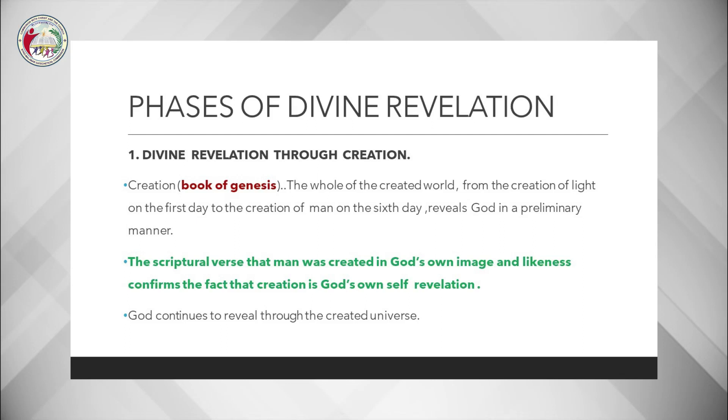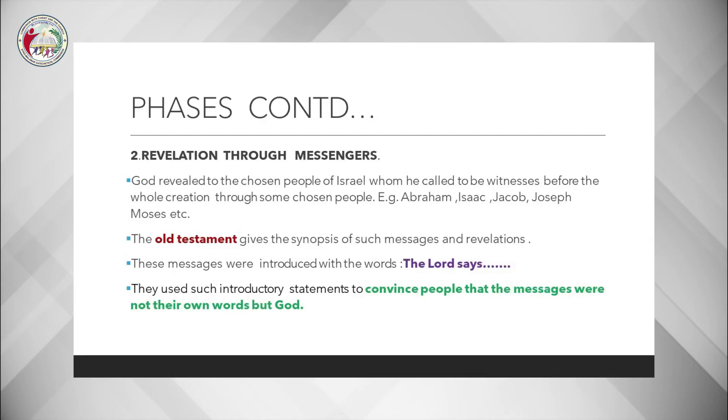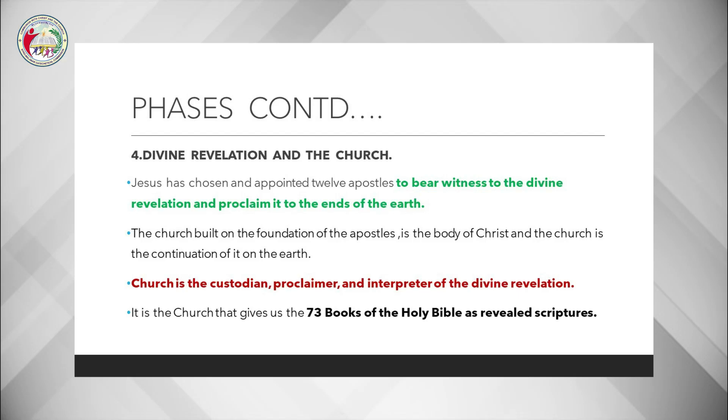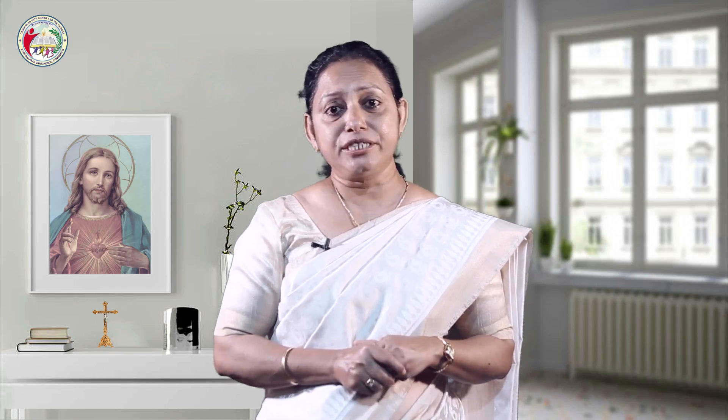The four phases are: divine revelation through creation; revelation through messengers; Jesus, the definitive revelation of God; and divine revelation and the church. The first phase is divine revelation through creation. The creation is very well explained in the book of Genesis. The whole of the created world, from the creation of light on the first day to the creation of man on the sixth day, reveals God in a preliminary manner. The scriptural verse that man was created in God's own image and likeness confirms the fact that creation is God's own self-revelation.